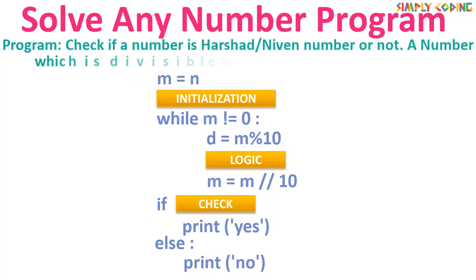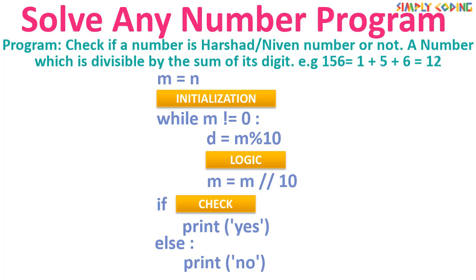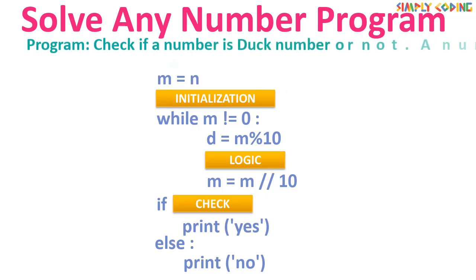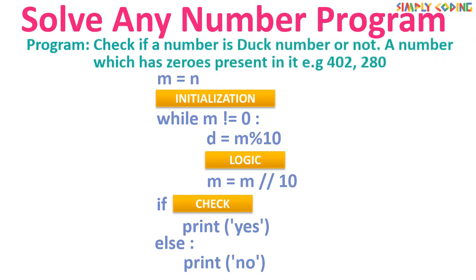Next is the Harshad number (or Niven number) — a number divisible by the sum of its digits. For example, 156: sum = 1+5+6 = 12, and 156 is divisible by 12. In initialization set `sum = 0`. In the loop find the sum of digits. In the check, verify if `n % sum == 0`.